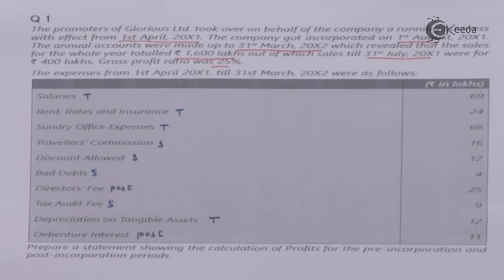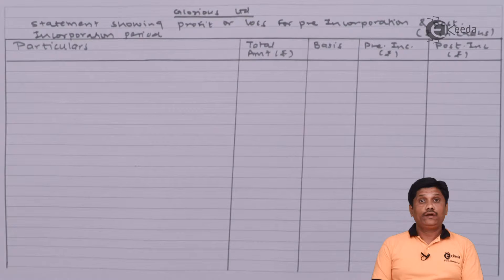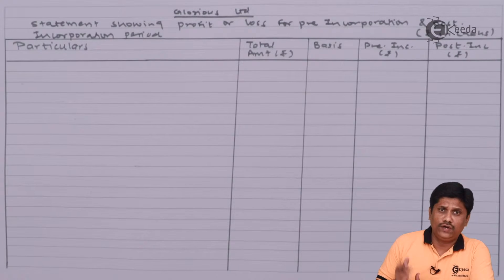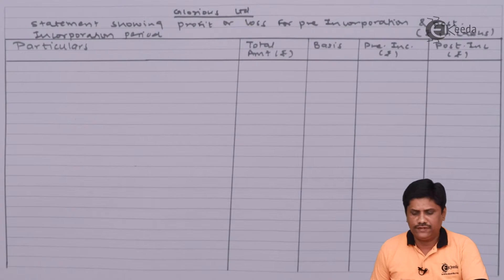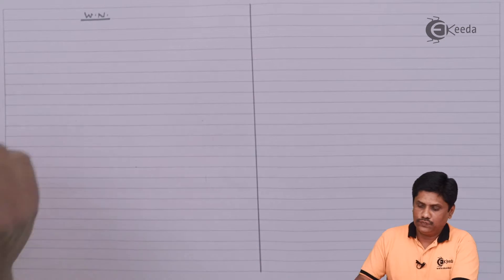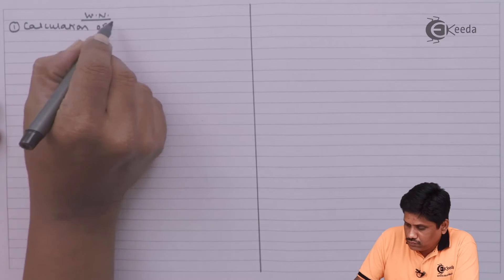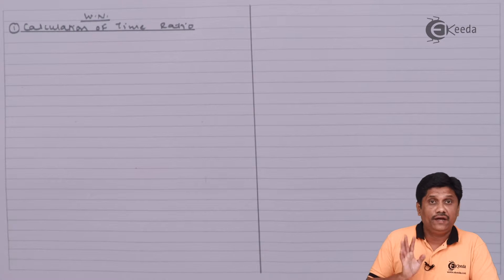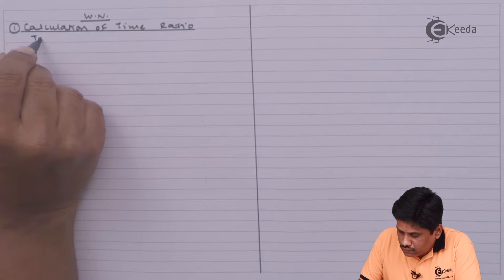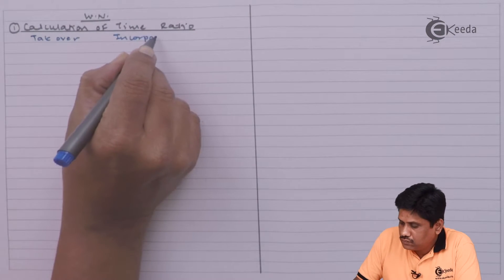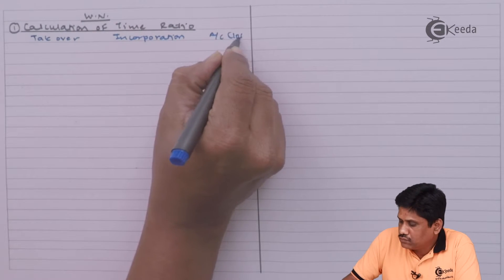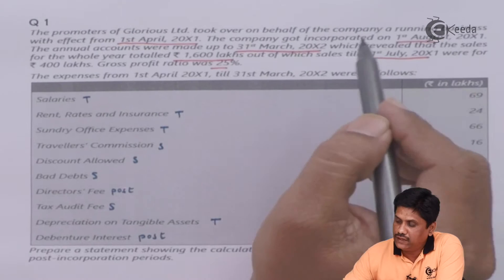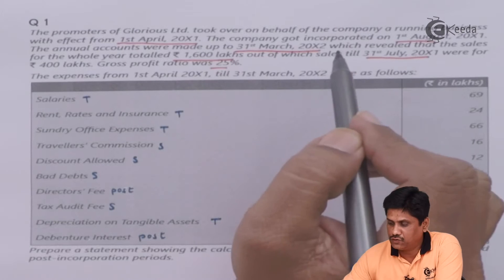The requirement is to prepare a statement showing calculation of profit for pre-incorporation and post-incorporation periods. We will work out two ratios — time ratio and sales ratio. For the time ratio, I need three dates: the takeover date, the incorporation date, and the account closing date. The takeover date is 1st April X1, the incorporation date is 1st August 200X1, and the year ending or closing date is 31st March 200X2.